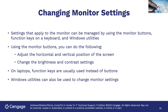Changing monitor settings: settings can be managed using monitor buttons, function keys on a keyboard, and Windows utilities. Using monitor buttons, you can adjust horizontal and vertical position, change brightness and contrast, and use degaussing — depending on the manufacturer. On laptops, function keys are usually used instead of buttons. Windows utilities can also be used to change monitor settings.